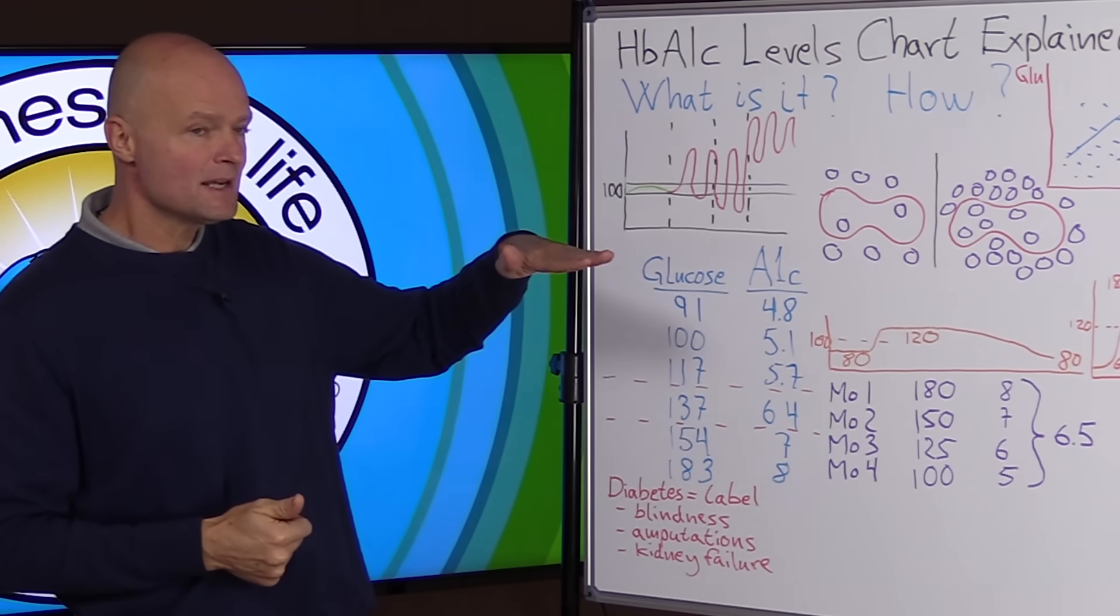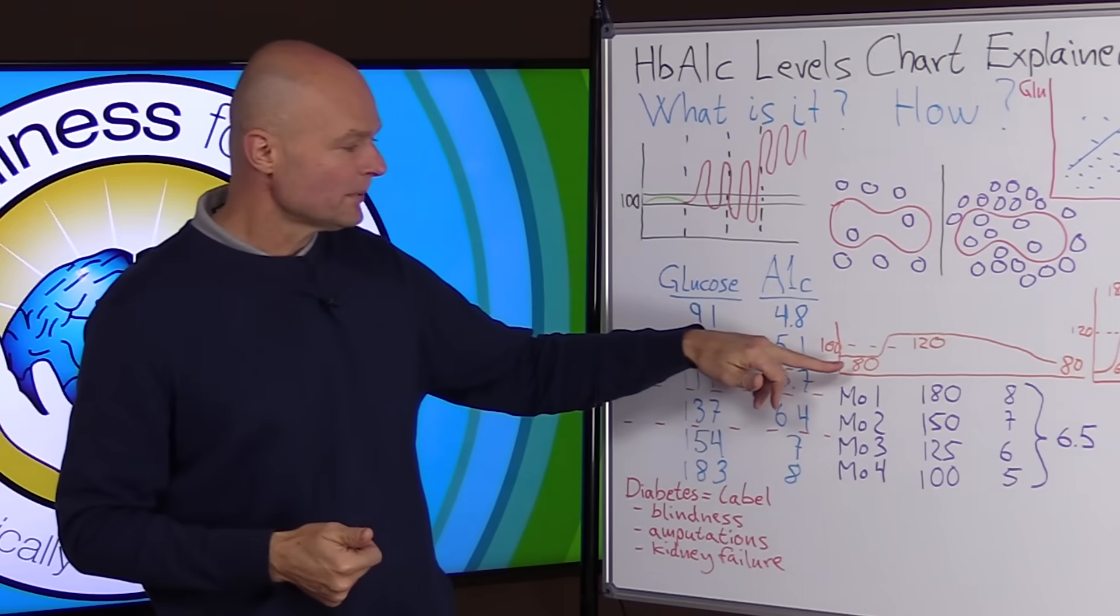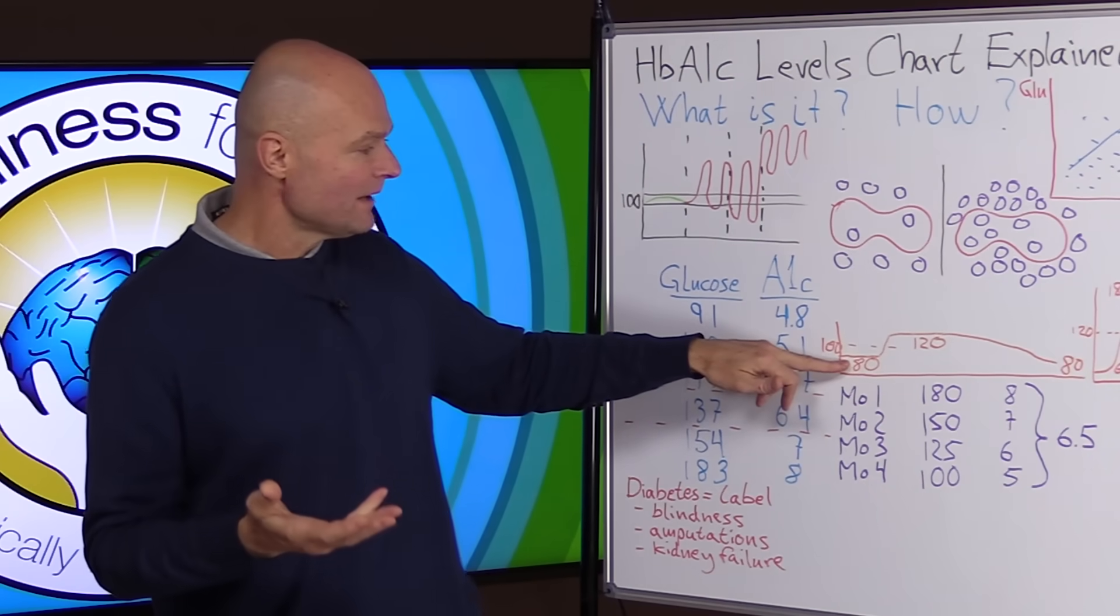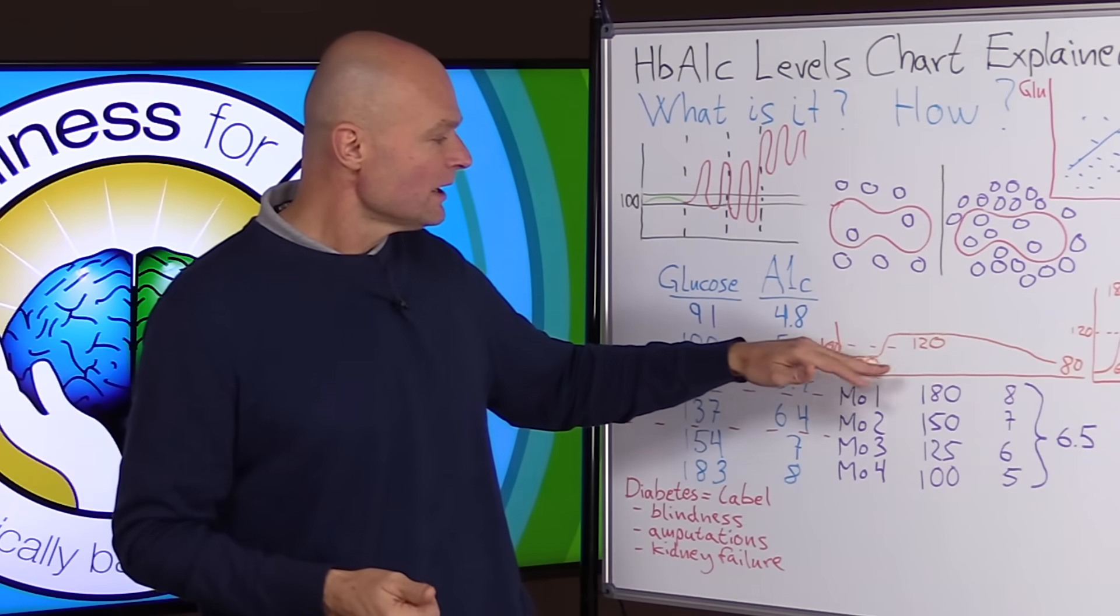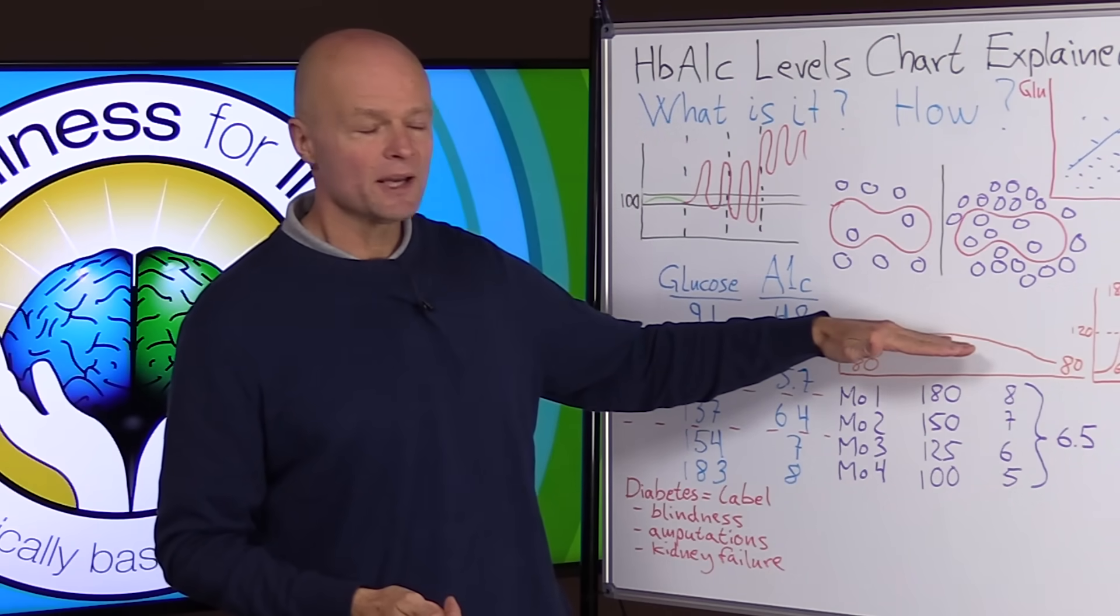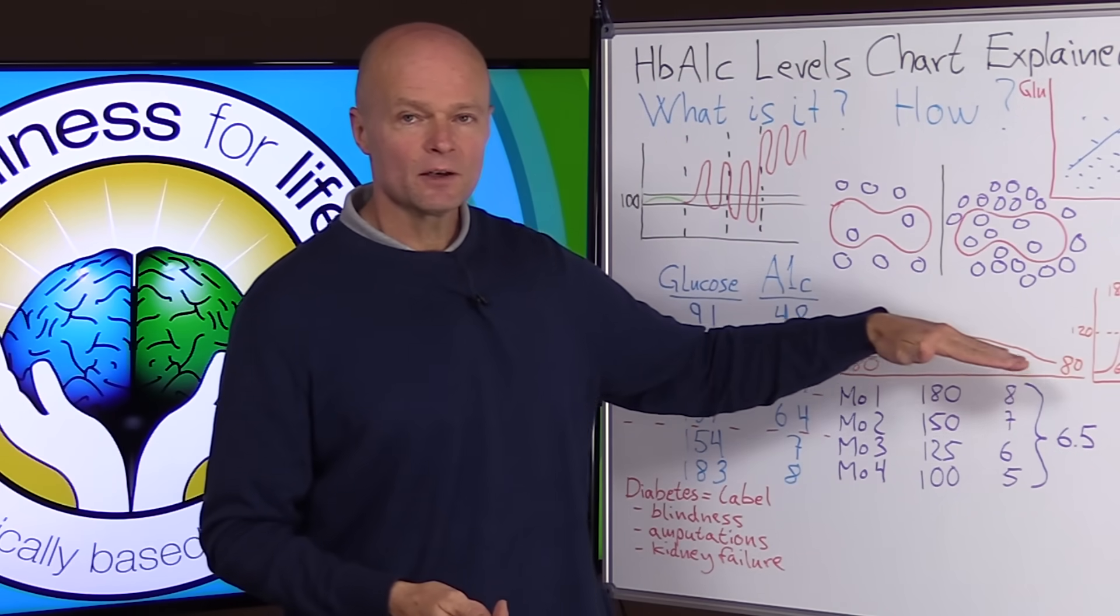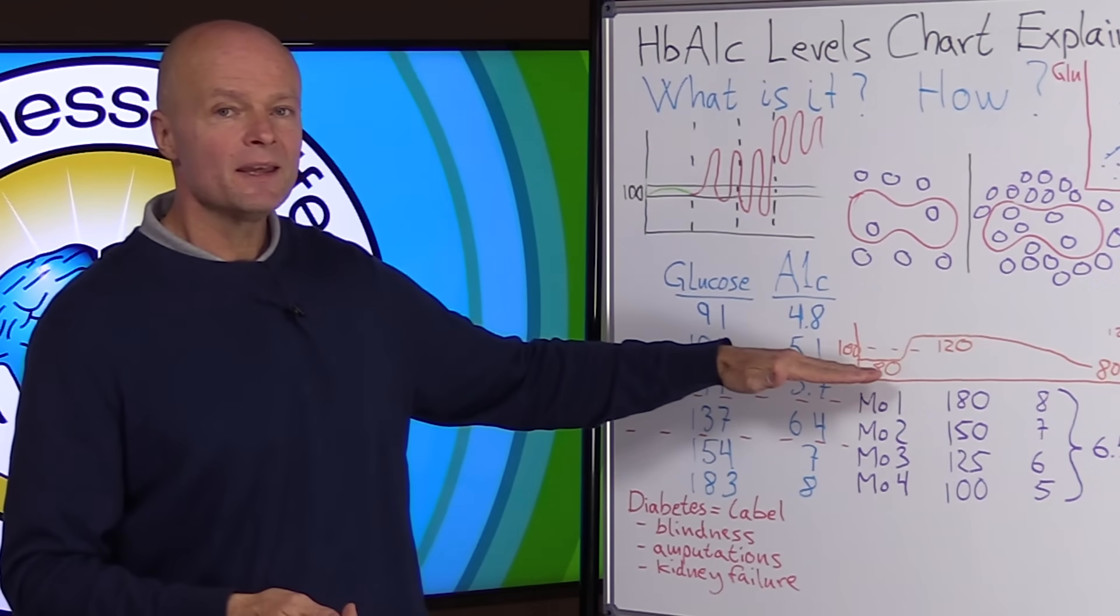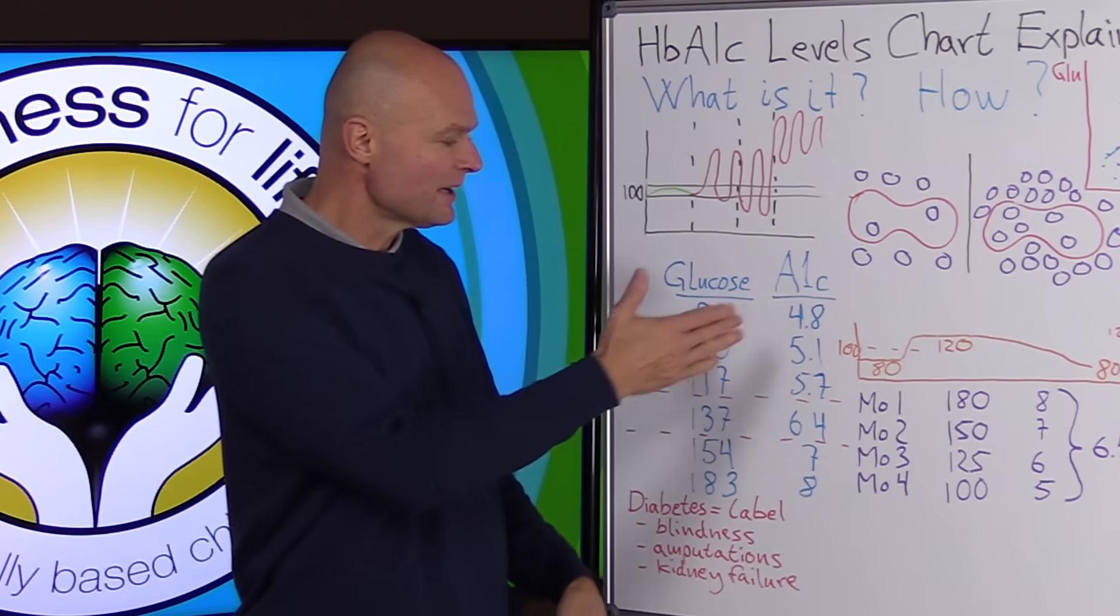But if you have an average glucose of a hundred, that means a lot of times it's going to need to be lower than that. And sometimes it's going to be higher than that. So for example, if you wake up in the morning and you have a fasting level of 80 and then you eat something, like something healthy, like an omelet or some avocado, then it's probably going to go up a little bit, but not tremendously. It's probably going to stay in the 120 range. And then as your body digests this over several hours, it's going to gradually come back down again. Your average level there might have been a hundred, even though your fasting level was an 80. So that's the thing with the A1C. It measures the average.